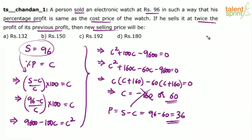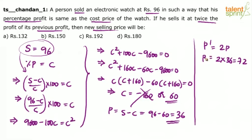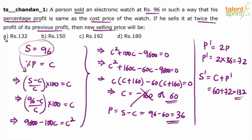The new profit P dash is twice the original profit, so 2 into 36 equals 72. The new selling price is cost price plus new profit: 60 plus 72 equals 132. So 132 — Option A — is the answer.